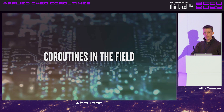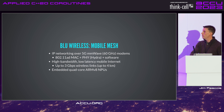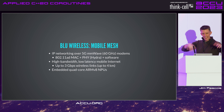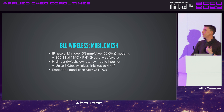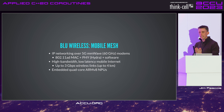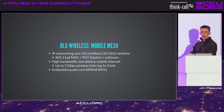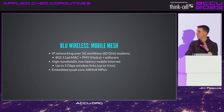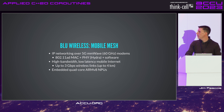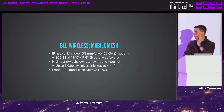Let's look at coroutines in the field. I work for Blue Wireless, which is literally just across the road. This is about IP networking over 5G millimeter wave 60 GHz modems. Specifically, we've developed an 802.11ad MAC and PHY — which Blue Wireless calls a Hydra — plus lots of software running on it, providing high bandwidth, low latency mobile internet. It's mobile too — you can put this on cars, trains, Formula One vehicles, high-altitude pseudo-satellite vehicles. It gives about three gigabits per second across a wireless link up to four kilometers range.